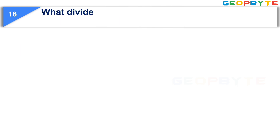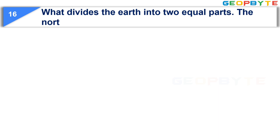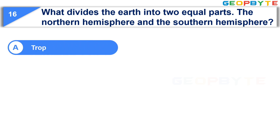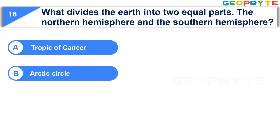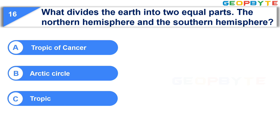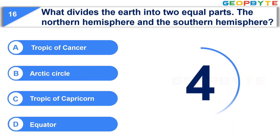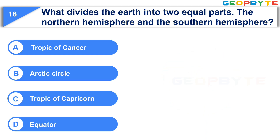The last question is: what divides the Earth into two equal parts — the Northern Hemisphere and the Southern Hemisphere? Option A: Tropic of Cancer. Option B: Arctic Circle. Option C: Tropic of Capricorn. Option D: Equator. Your time starts now. Your time is up and the correct answer is Option D: Equator.